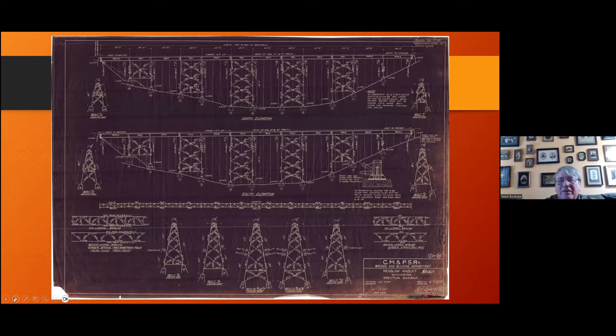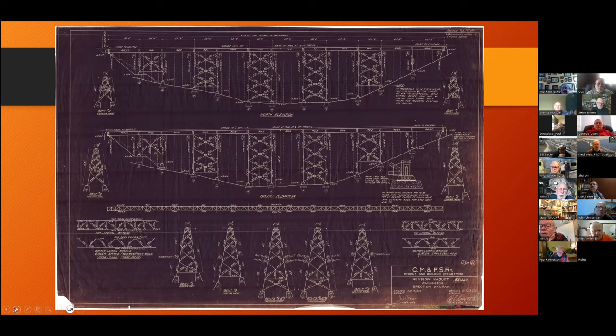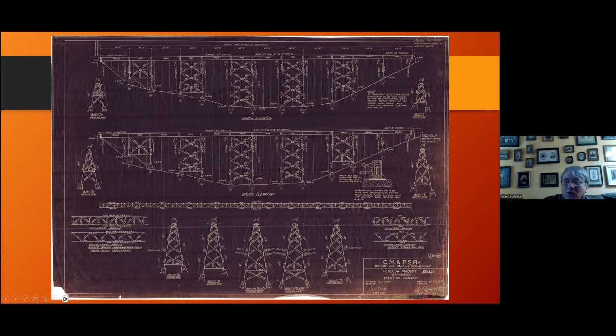Oftentimes, railroaders talk about track and time, meaning the maintenance away people or the engineering people getting the right to shut down the track for hours or even a day or so. This was happening while the railroad was in operation. This is just an example of the plans for this bridge, intricate steel work. It was obviously well-engineered and well-designed through their engineering department, and a lot of documentation on this. It's the Chicago, Milwaukee, and Puget Sound Railway, a subsidiary of the Milwaukee Road.